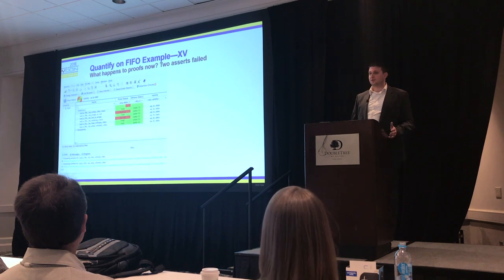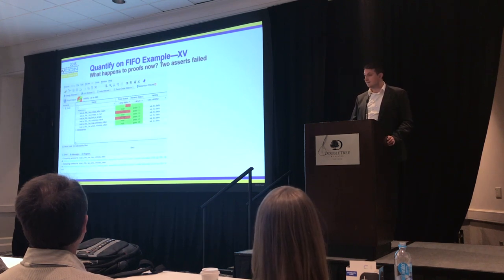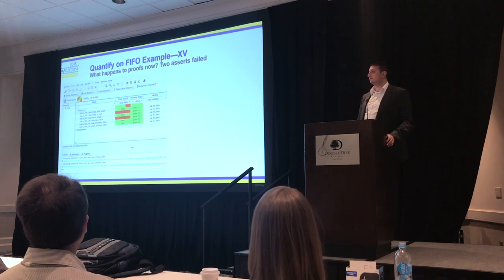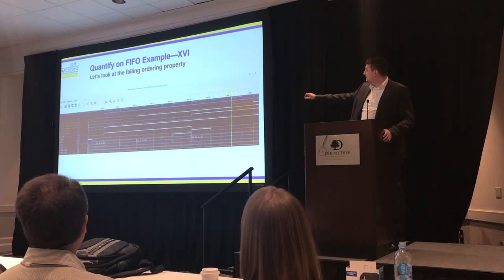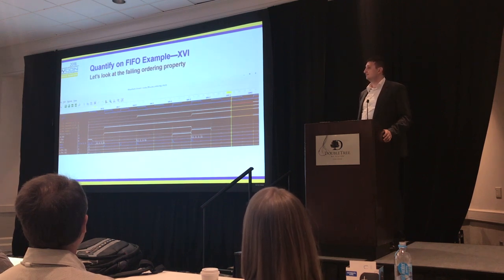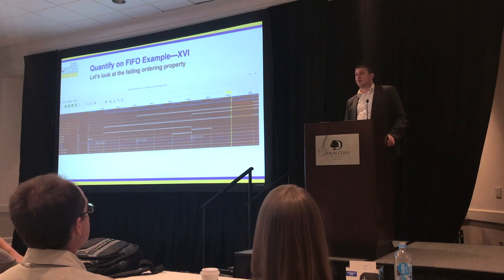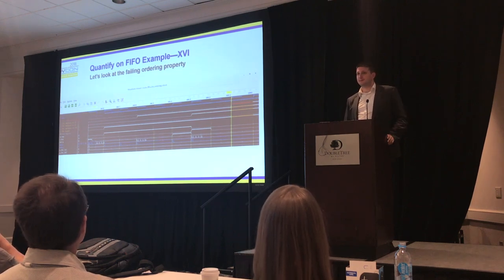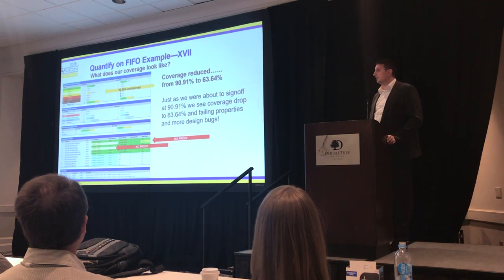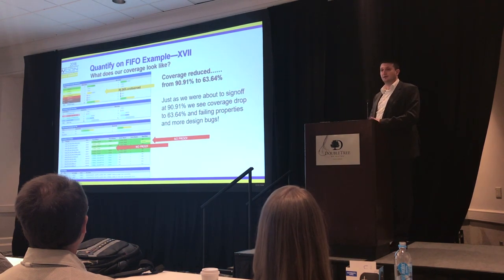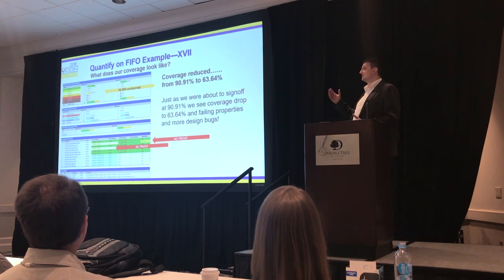If I remove this constraint, which is obviously over-constraining the functionality of my design, we now have two checks failing — the order check now starts to fail. Looking at the debug of this check, you can see that when the FIFO is full, there is still one write asserted, and value one is overwriting value zero. Let's quantify again with this assertion set — we were comfortable at 90%, ready to pack up and go home, and now we're back at 63%.